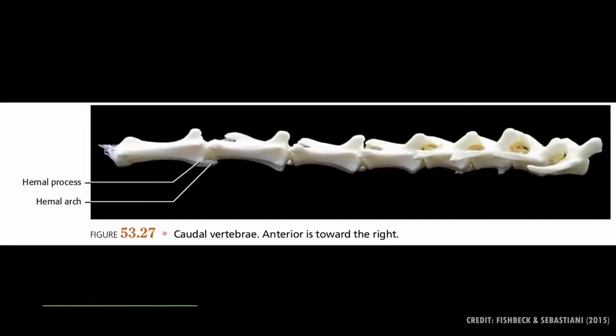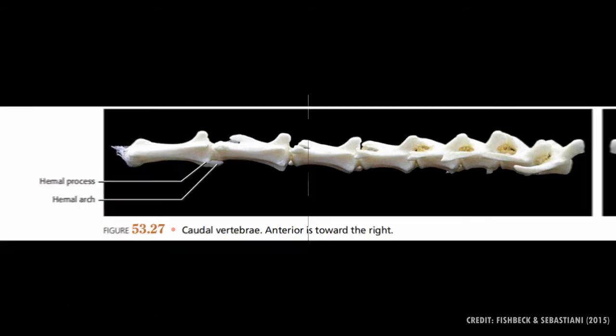The last type are the caudal or coccygeal vertebrae. As you move caudally, you don't really see the neural canal or spinous processes — almost often it's just the centrum. On the ventral side you may see a few projections called the hemo processes.